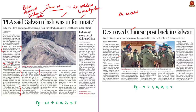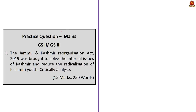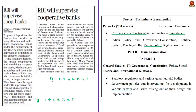We need to wait and watch how the de-escalation exercise would move further and what would be India's reaction. This concludes the discussion of the editorial and news articles related to the recent tensions between India and China. Now let us look at a news article about the decision of the central government to bring all urban and multi-state cooperative banks under RBI's supervision.